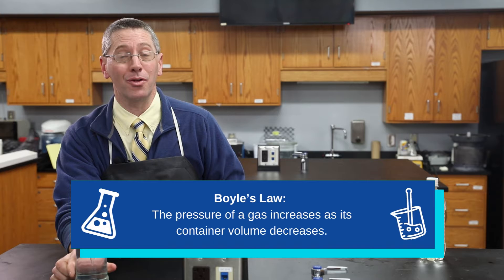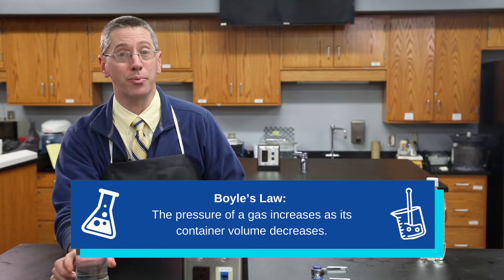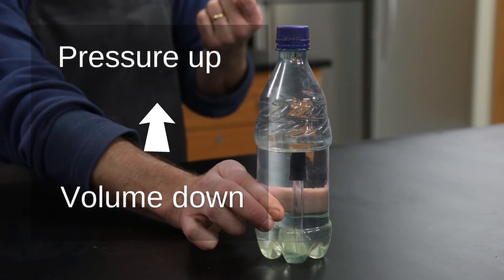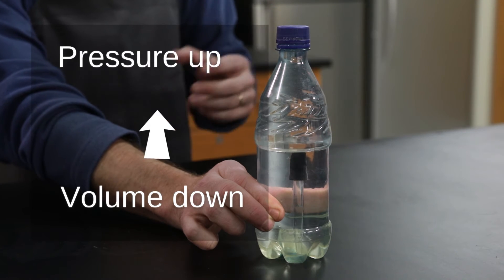This is Boyle's Law, the relationship between volume and pressure. As I squeeze the bottle, the volume goes down but the pressure goes up, squirting water into the dropper, changing its density and causing it to sink.